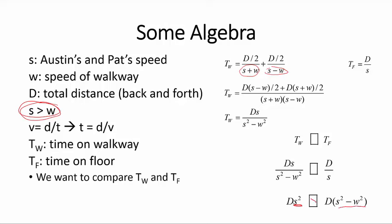This quantity is greater, so the time on the walkway is always greater than the time on the floor. So the person on the floor always wins. Thank you.